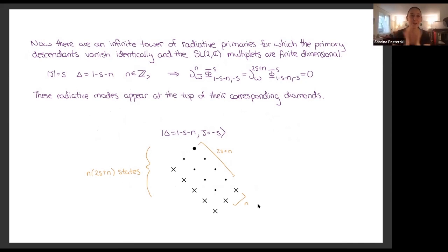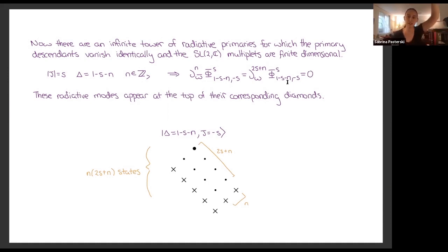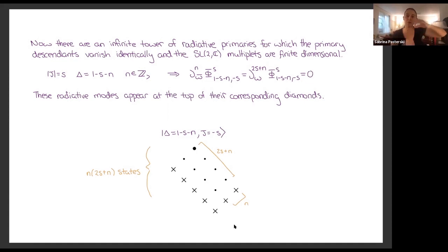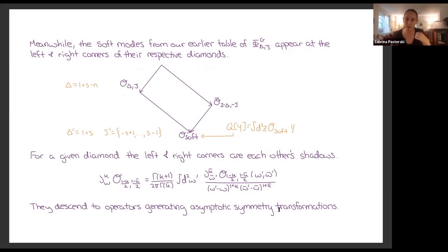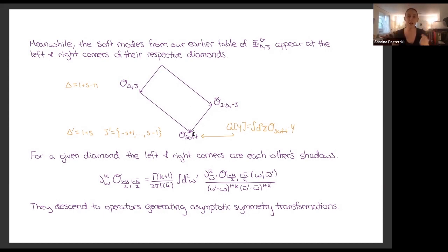Going through the infinite tower of radiative primaries: in the full classification you have a full tower of conformal dimensions, giving w-infinity generators. For values of delta negative enough, the one-over-(q·x)^{-delta} is an integer power and enough ∂_w derivatives send it to zero — that's how you see the finite-dimensional multiplet structure. For the soft theorems, the primary that is the conformally soft theorem sits at either the left or right corner, its shadow at the other corner, and they descend to the soft operator — first investigated by Banerjee.